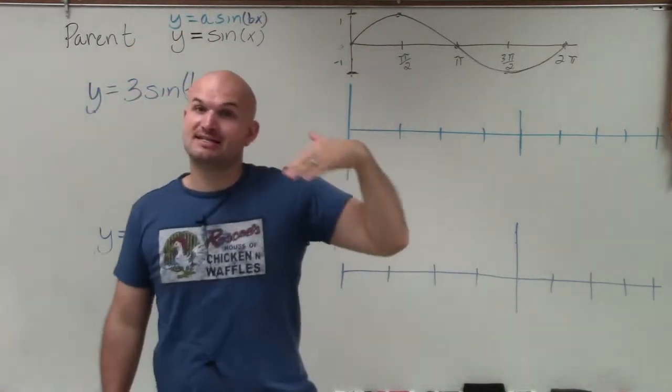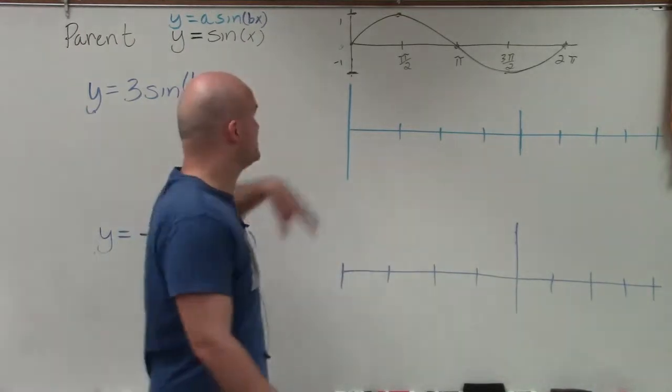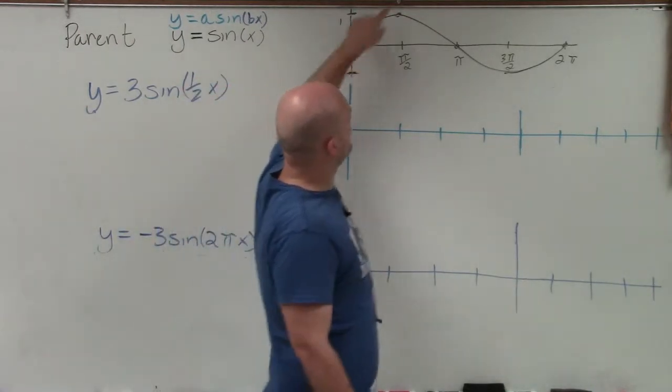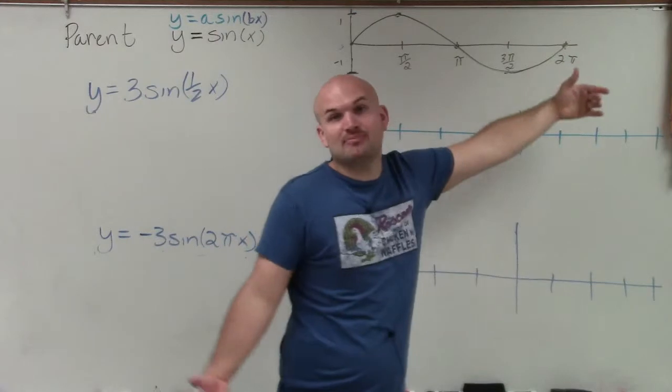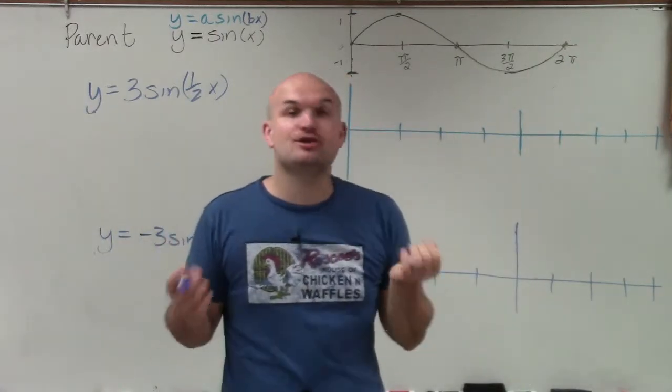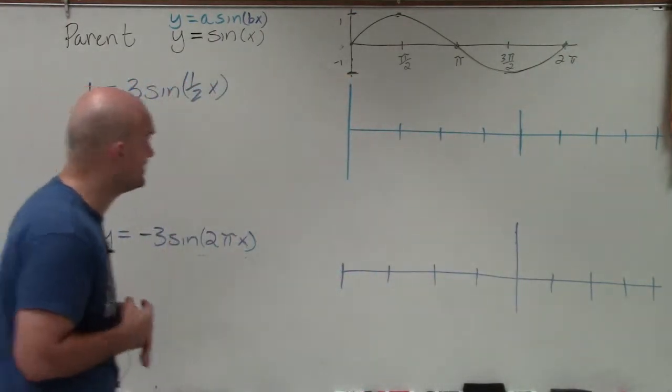The period is going to be how long it takes the graph to complete one revolution. So you can see it starts at 0, goes up, goes down, goes up, and then it completes one revolution. So it takes 2 pi for it to complete a revolution. We'll go over how to determine that.